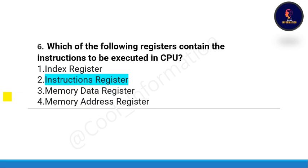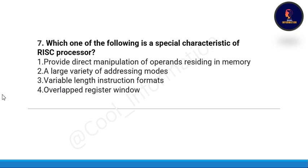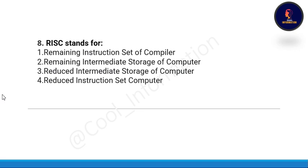Next question — very important: which one of the following is a special characteristic of a RISC processor? Option A: direct manipulation of operands residing in memory. Option B: a large variety of addressing modes. Option C: a variable length instruction format. Option D: overlapped register window. The correct option is option D, which is overlapped register window.